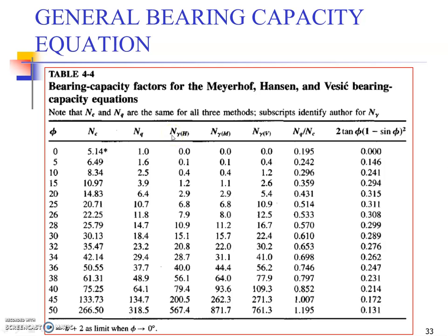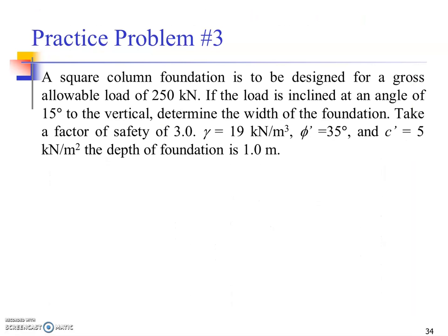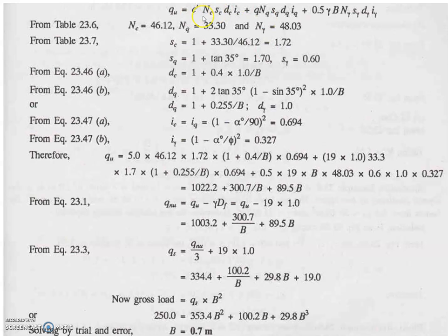A simple problem: a square column foundation is to be designed for a gross allowable load of 250 kilonewtons. If the load is inclined at an angle of 15 degrees to the vertical, determine the width of the foundation. Take a factor of safety of three. Unit weight of the soil is 19 kN/m³, phi-dash is 35 degrees, cohesion is 5 kPa, and the depth of the foundation is 1 meter. We're using Hansen's equation and can use the table directly for the given phi values.